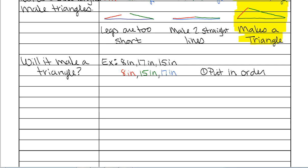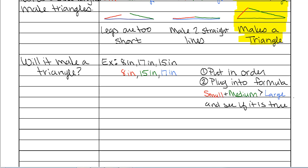Next, plug the values into the formula and see if it's true or not. We want small plus medium greater than large, so 8 plus 15 greater than 17. 8 plus 15 is 23, and 23 is actually bigger than 17. On your test, you're going to be asked to prove whether they make a true triangle or not — this right here would be your proof. And of course, your answer would be that yes, it makes a triangle.